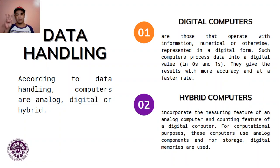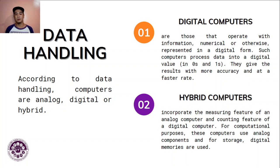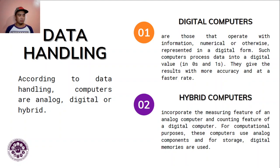The third type under data handling is hybrid computers. Hybrid computers incorporate the measuring feature of an analog computer and the counting feature of a digital computer. For computational purposes they use analog components, and for storage they use digital memories. There are quite a few good examples of hybrid computers we can see today.